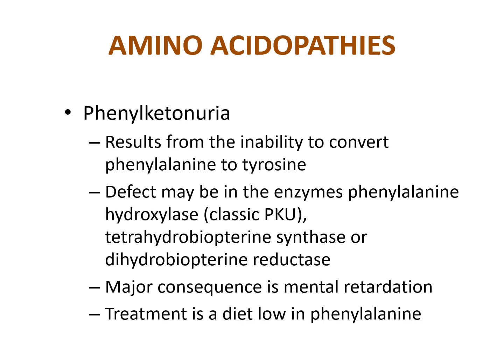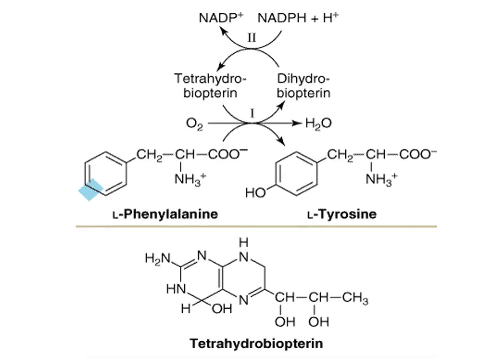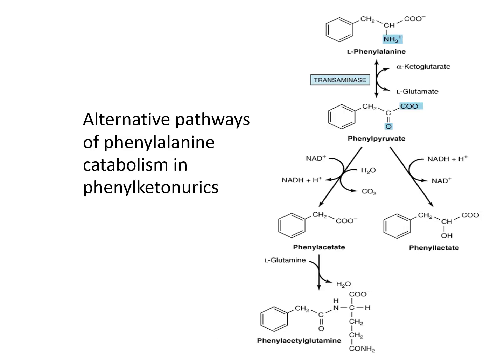Phenylketonuria results from the inability to convert phenylalanine to tyrosine. The defect may be in phenylalanine hydroxylase, tetrahydrobiopterin synthase, or dihydrobiopterin reductase. The major consequence is mental retardation, and treatment is a diet low in phenylalanine. Alternative pathways of phenylalanine catabolism are available in phenylketonurics.